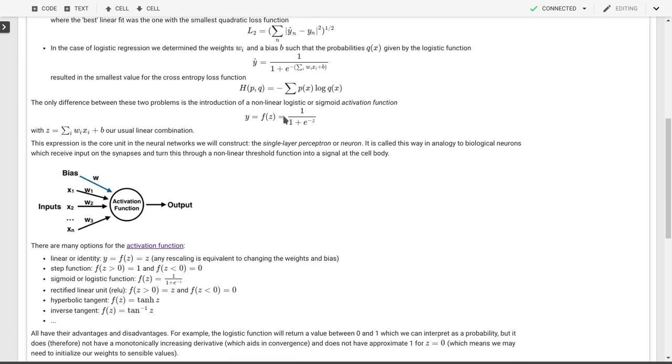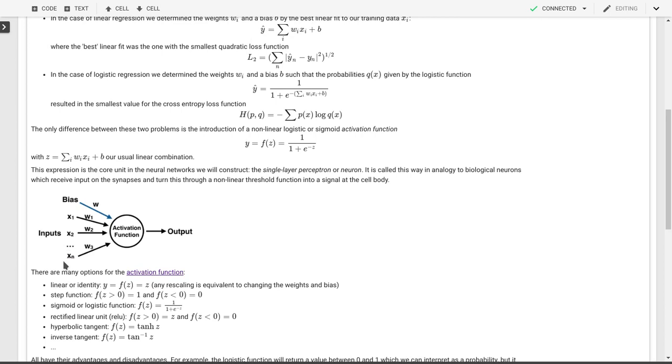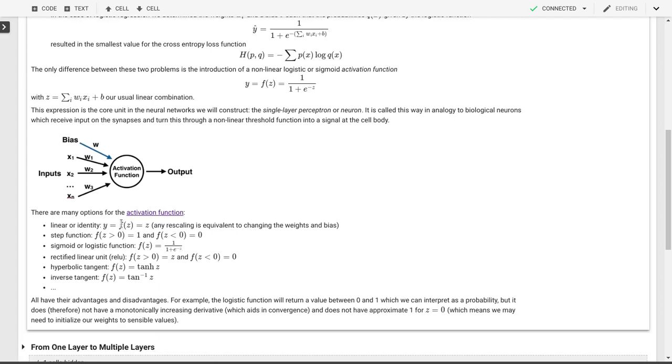We've already seen two of those activation functions. The linear or identity activation function is what we used in linear regression. So f of z is just equal to z. You might wonder why don't we have f of z equal to 2z or 5z or 10z? Well, any rescaling in that z would be equivalent to changing our weights and our biases. Another activation function is just a regular step function. So if z is positive, the function is 1. If z is negative, the function is 0. We have a logistic function, 1 over 1 plus e to the minus z. We have what we call a rectified linear unit or ReLU, that's equal to the identity or the linear function for positive z and 0 for negative z. Then we can use hyperbolic tangent, inverse tangent.